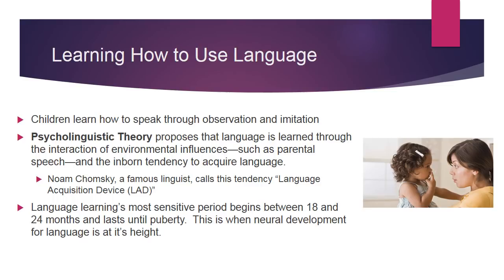Language learning's most sensitive period begins between 18 and 24 months and lasts until puberty. This is when neural development for language is at its height. This is when you want to learn a second language — those neural developments are so ready. It's much easier to learn a second language when you're six or seven years old than when you're 17 and your brain is resistant to it.